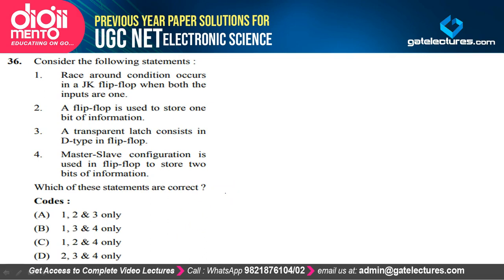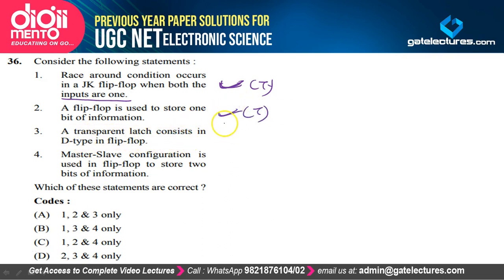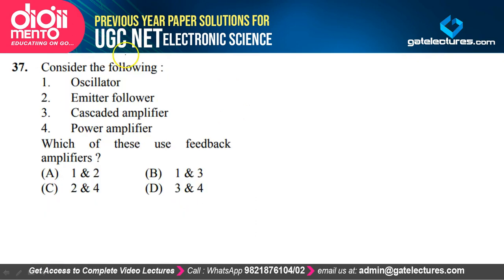Question 36: The race-around condition occurs when a JK flip-flop is operated in the toggling mode (both inputs are 1) — true. A flip-flop is used to store 1-bit information — true. A transparent latch consists of a D-type flip-flop — true. Master-slave configuration is used in a flip-flop to store 2 bits of information — absolutely false. So only statements 1, 2, and 3 are true — option A is correct.